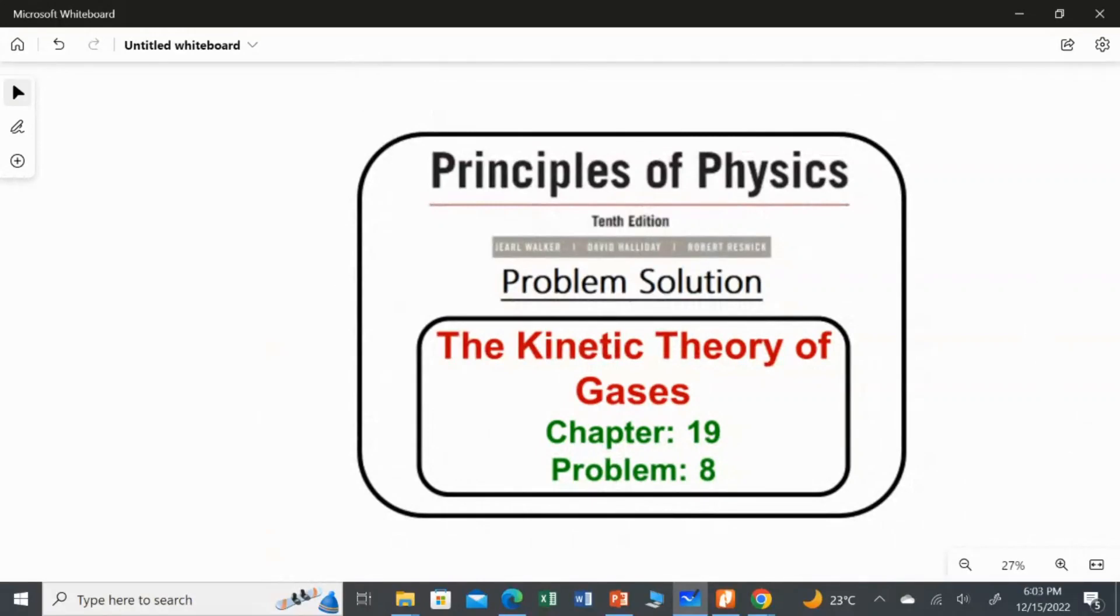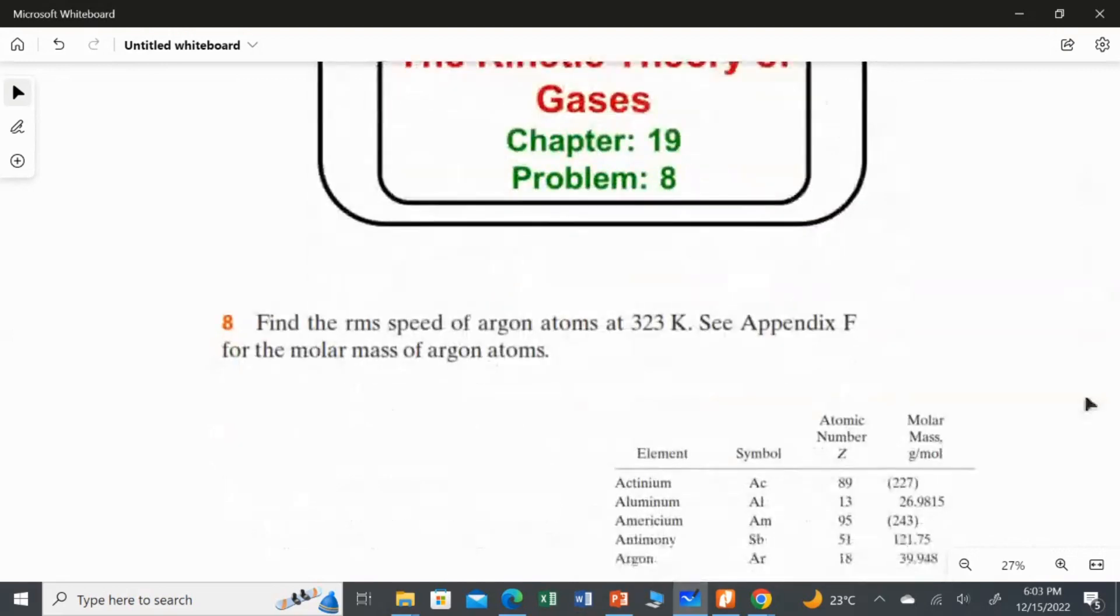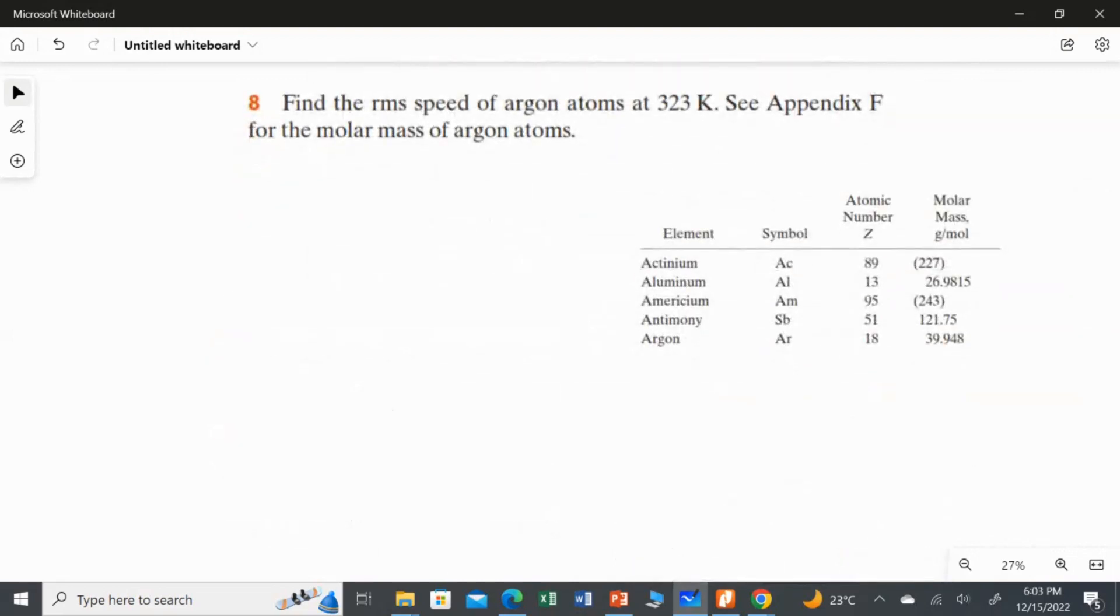In this video, I am going to solve the 8th problem from Chapter 19. Find the RMS speed of argon atoms at 323 Kelvin. The molar mass of argon atoms is given here as 39.948 gram per mole.